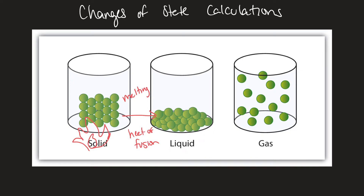All the energy that you're adding at this point, when you're melting, is just enough to change the particles from solid to liquid. An interesting phenomenon is that as a substance is going through a phase change, the temperature will not change. The energy being added is just to convert it from a solid to a liquid state.